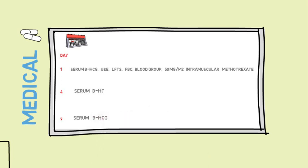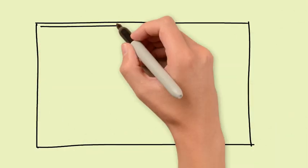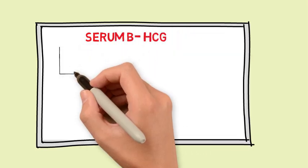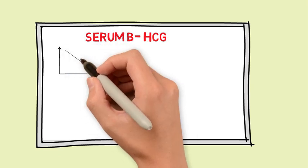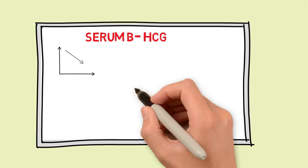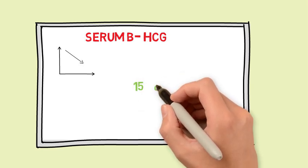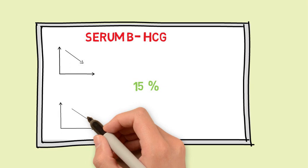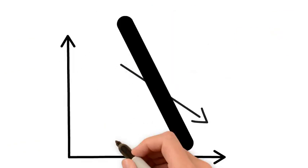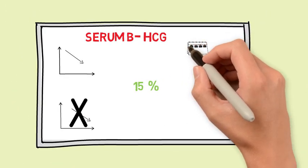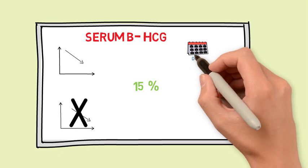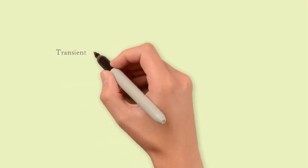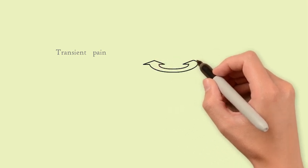The dose of methotrexate is 50 milligrams per meter squared. On day one, measurements are taken for CBC, liver function test, kidney function test, and beta-HCG. Then beta-HCG is measured again on day 4 and day 7. If the level of beta-HCG decreases by 15% between day 4 and day 7, this indicates success of treatment. Beta-HCG is then checked weekly until the level is below 15 international units. If the level does not decrease by 15%, repeat transvaginal ultrasound to exclude ruptured ectopic pregnancy and give a second dose of methotrexate.